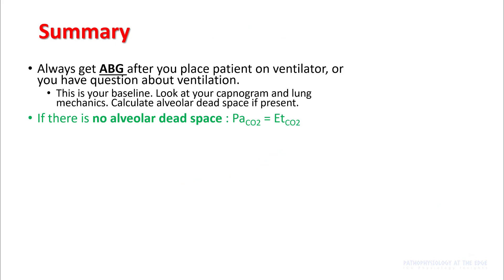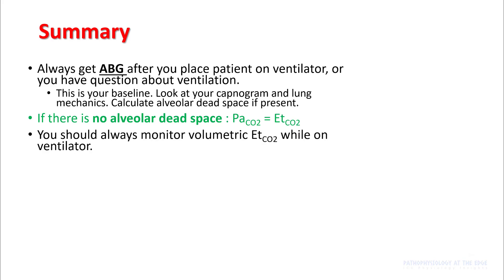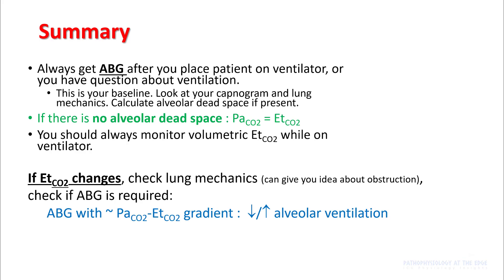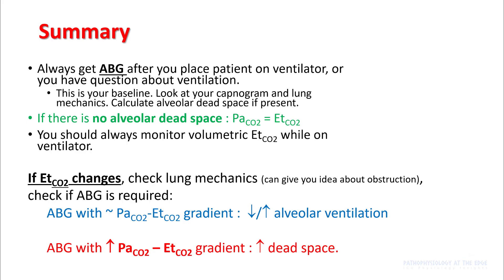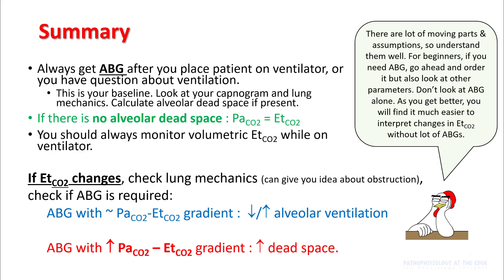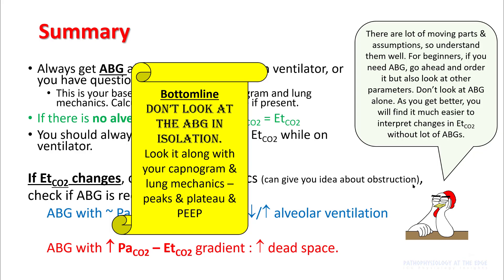In summary: always get a blood gas after you place the patient on the ventilator — this is your baseline. Look at your capnogram and lung mechanics alongside this ABG. Calculate alveolar dead space if present. If there is no alveolar dead space, PaCO2 will equal end-tidal CO2. Always monitor volumetric end-tidals while on the ventilator, and if end-tidal changes, look at lung mechanics and check ABG if required. If ABG shows a similar PaCO2 and end-tidal CO2 gradient, only alveolar ventilation changes are causing the problem. If you see an increased PaCO2-to-end-tidal gradient, there is increased dead space. For beginners, get a blood gas but also look at other parameters — don't look at ABG alone.